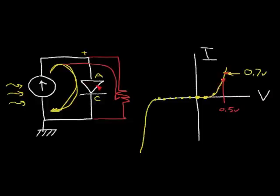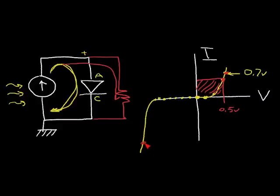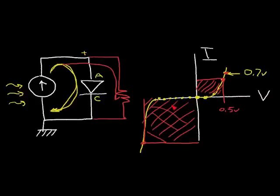If we look at the power dissipated by this diode, at the normal operating point it's current times voltage, which is the area under the I-V curve. However, if the voltage across this diode is reversed and we enter the breakdown region, we can dissipate a lot more power, because the area under the curve — voltage times current in breakdown — is much larger. The further we go into breakdown, the more area under the curve and the more power dissipation.